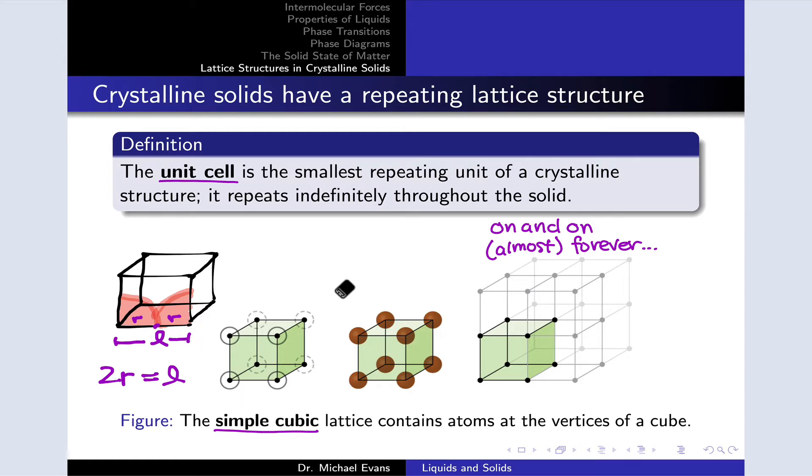So the full volume of the unit cell, then, we can calculate as L cubed, length times depth times height, something like that. That's going to be equal to 2R cubed, 2R quantity cubed, or 8R cubed overall.